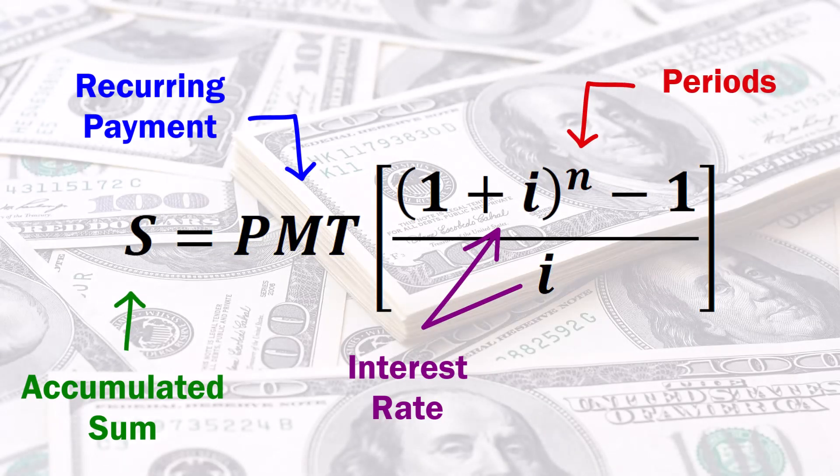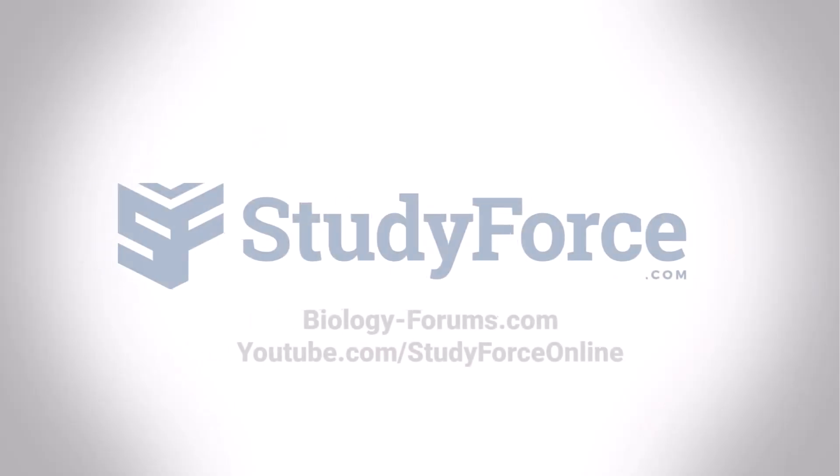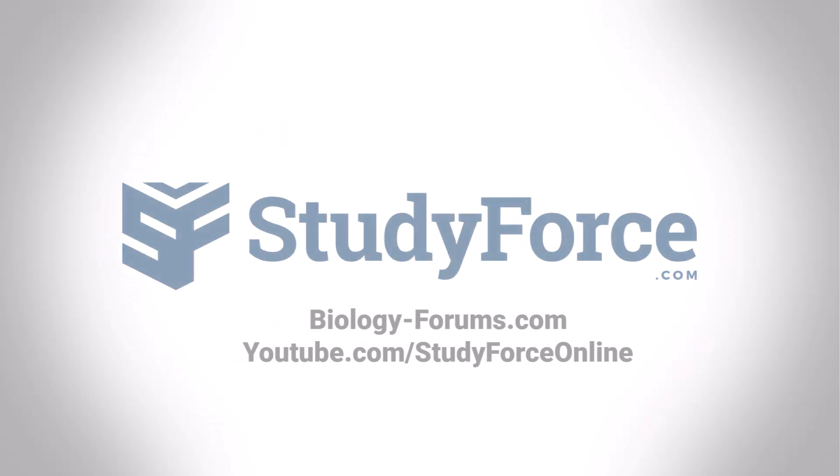As you can see, by combining what we know about the future value of compound interest, annuities, and geometric progression, we have crafted a handy formula that streamlines complex calculations into something much more manageable. I hope your new understanding of annuities makes handling finances easier and empowers you to make wiser choices with your cash. Thank you for watching.